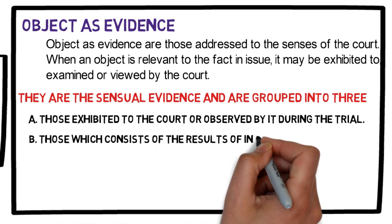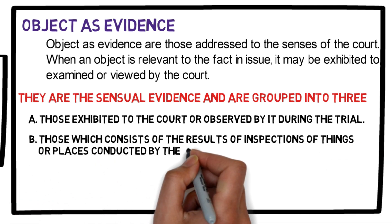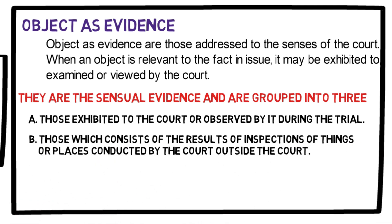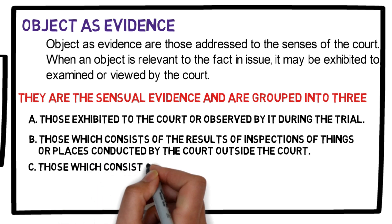Second, those which consist of the results of inspections of things or places conducted by the court outside the court. This is also called ocular or site inspections — for example, inspection of the crime scene. For objects which cannot be brought to court, observations can be made by the parties through pictures and other representations such as sketches and measurements.